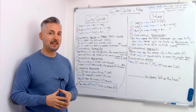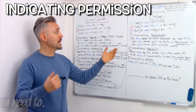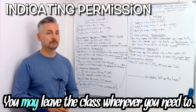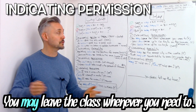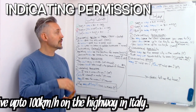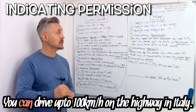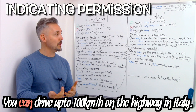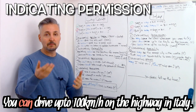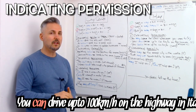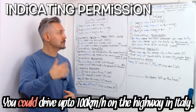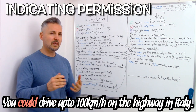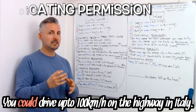When do we use may? To indicate permission. You may leave the class whenever you need to — this is a very formal situation. Or: you can drive up to 130 kilometers an hour on the highway in Italy — this is a more informal situation and means you're allowed to. You could even use could: you could drive up to 130 kilometers an hour on the highway in Italy — that would be a more conditional type of sentence.